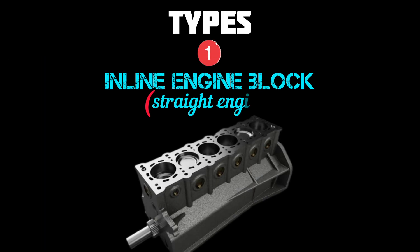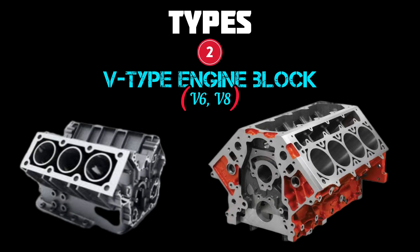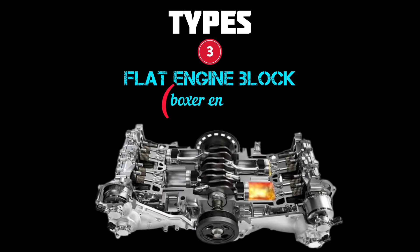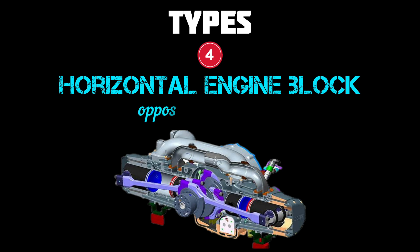Types: One, inline engine block, also known as a straight engine. Two, V-type engine block, such as V6 and V8. Three, flat engine block, or boxer engine. Four, horizontal engine block, or opposed-piston engine.